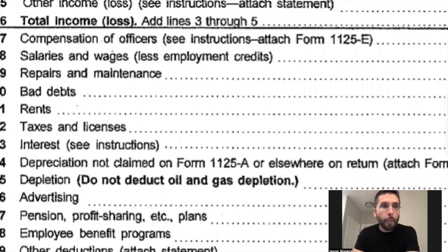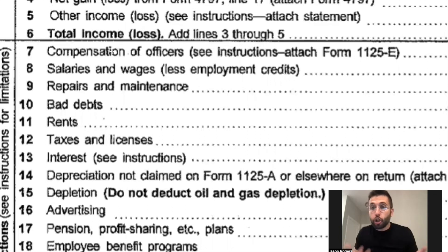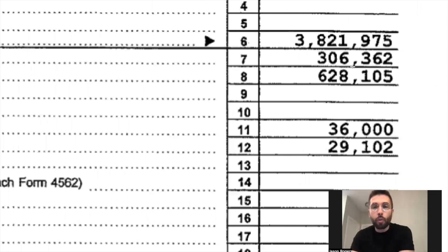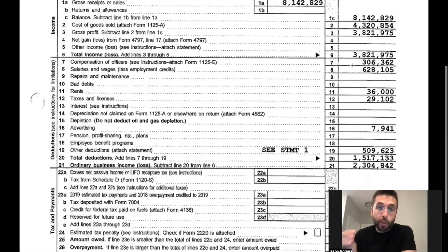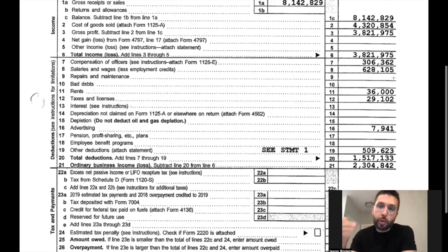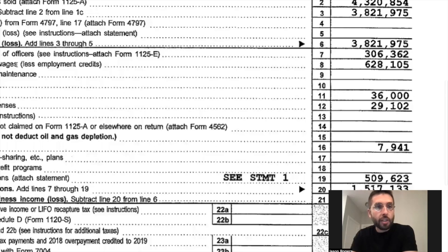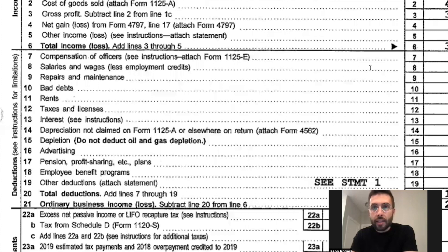Let's start with line seven, compensation of officers. Officers are basically shareholders of the company and they had $306,000 worth of payouts to officers. Line eight are the salaries and wages of the back office — the bookkeeper, the HR person, any salesperson or person behind the scenes not generating revenue directly. Line eight, they had $628,000.